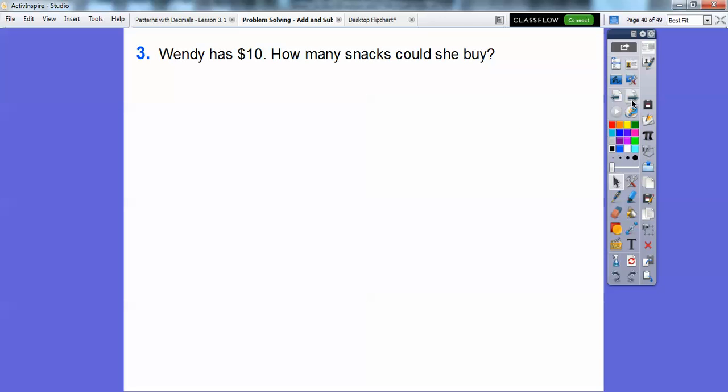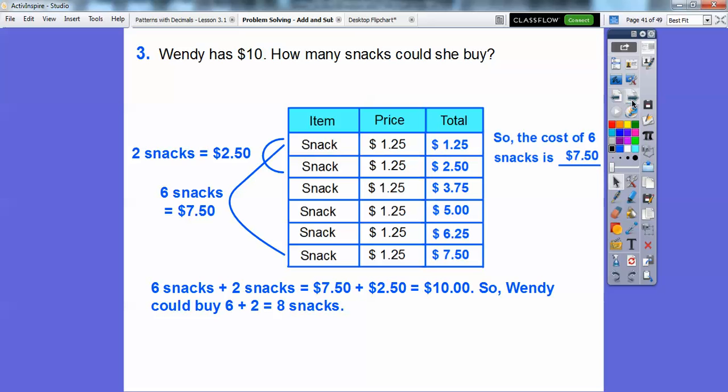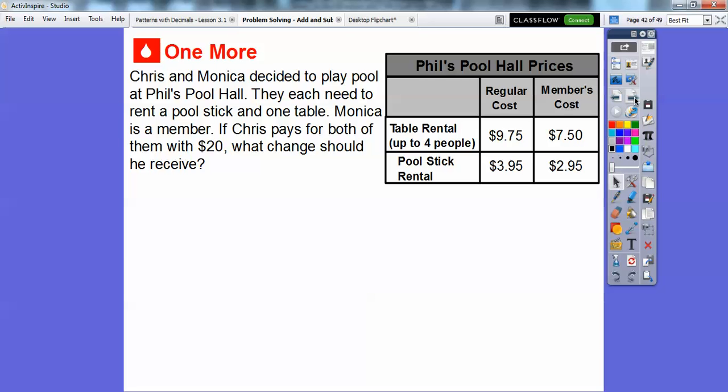Wendy has $10.00. How many snacks can she buy? Let's go back to that table right there. We can see that two snacks cost $2.50 right there. And all six snacks cost $7.50. So if we add two snacks with six snacks, that's going to be $7.50 plus $2.50, which is $10.00. So Wendy can buy six plus two snacks or eight snacks right there. Let's try one more, you guys.